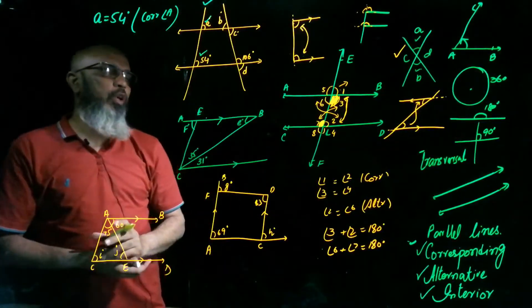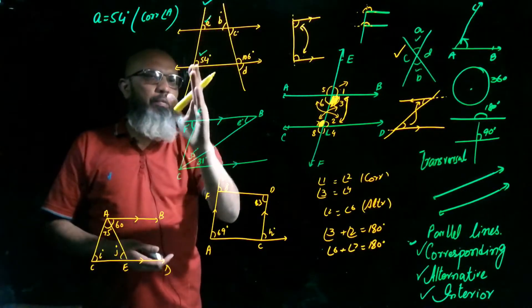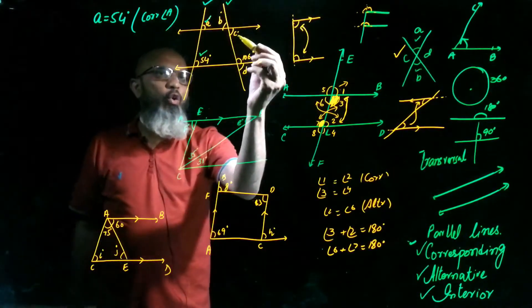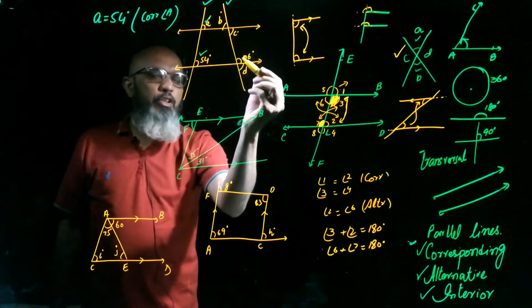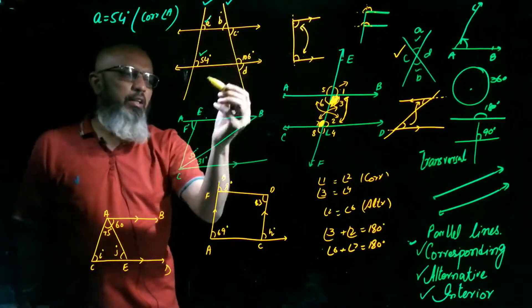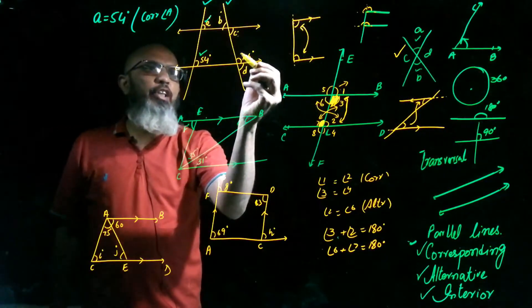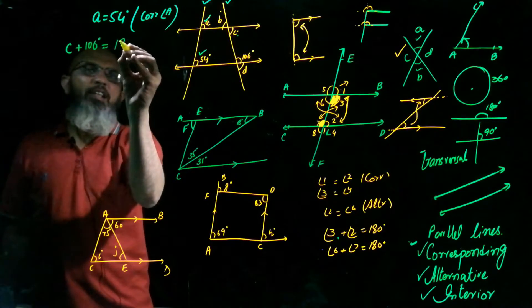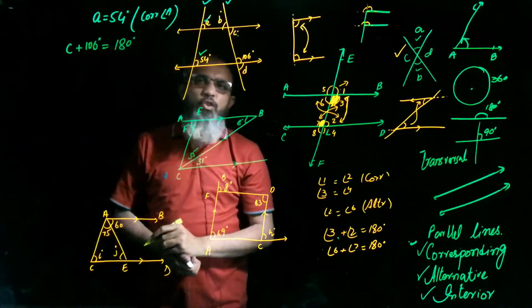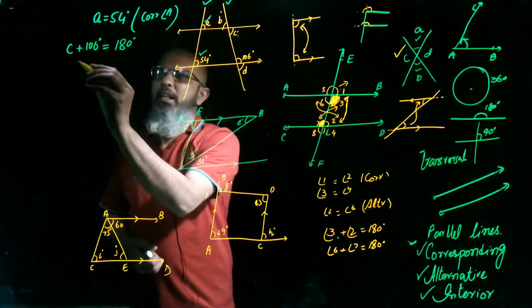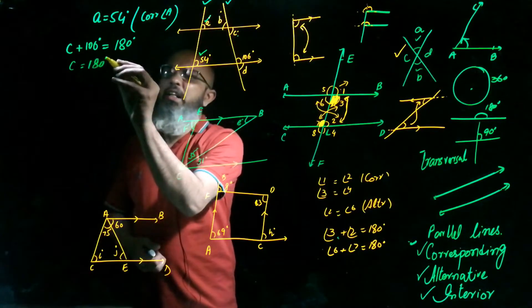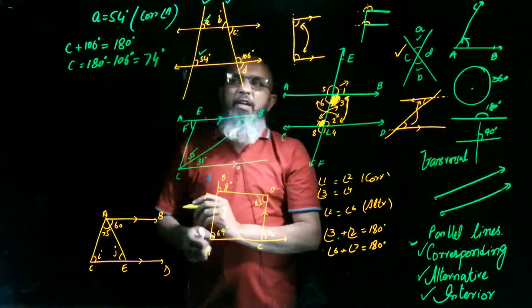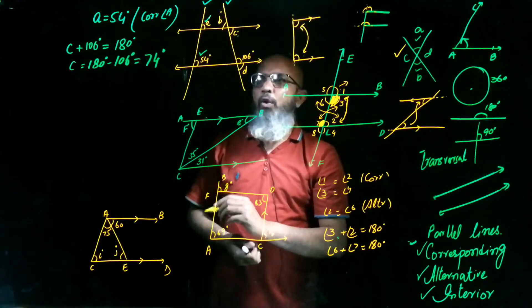Now come to the second transversal. These two angles are interior angles. We know the sum of two interior angles equals 180 degrees. So angle C plus 106 degrees equals 180 degrees. Therefore, C equals 180 minus 106, which gives 74 degrees. You write here: interior angles.